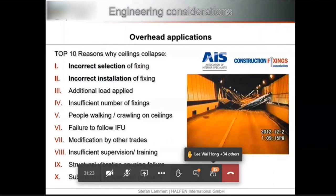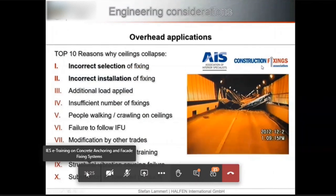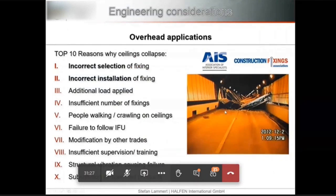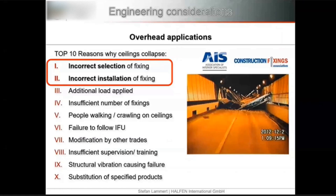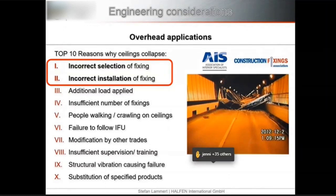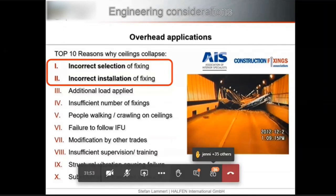Independent associations investigating overhead ceiling collapses have identified incorrect installation and incorrect selection of fixings as the most relevant root causes. This highlights the importance of both proper installer training and appropriate fastener selection for overhead applications.